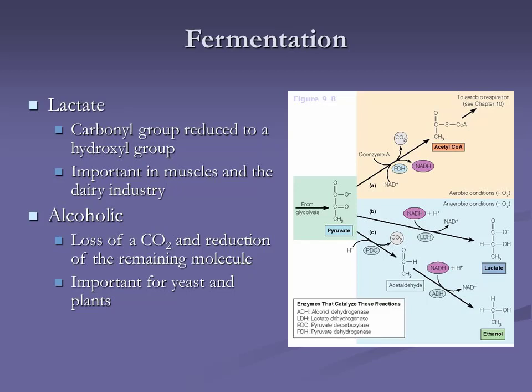Then we send electrons to the electron transport chain and ATP synthase — oxidative phosphorylation — which at the very end requires oxygen. If we have oxygen, we go aerobic. If we don't have a sufficient supply of oxygen, we go down an anaerobic pathway called fermentation.